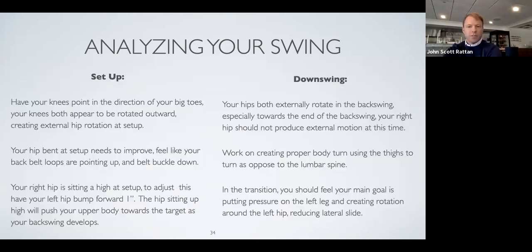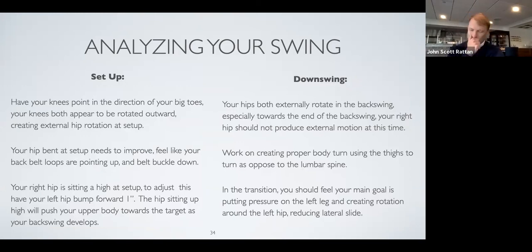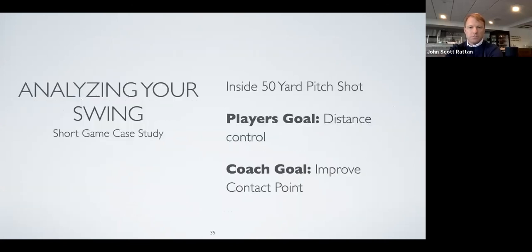The setup work — similar to the Sam Snead comparison we showed — is a big way to help him start out. The external rotation in the backswing is causing the excessive slide past the ball. His force plate would show no lateral braking available in the left side, which is a big problem. He may pick up a lot more speed and distance from having those knees and thighs work better toward the ball.